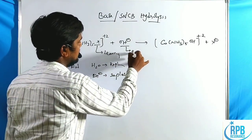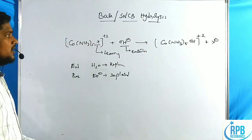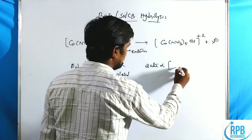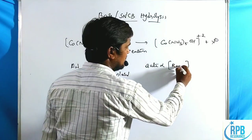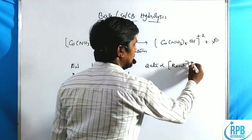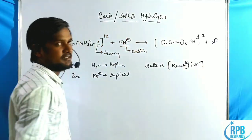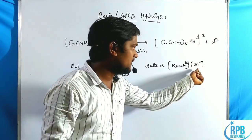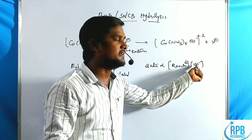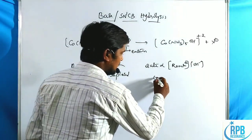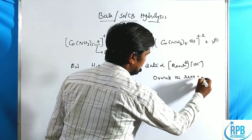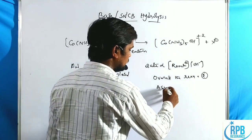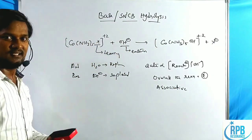According to kinetic studies, the rate of reaction is directly proportional to the concentration of the reactant complex as well as OH minus concentration. With respect to the nucleophile OH minus, it follows first-order kinetics. Overall the reaction is second order, meaning it follows second-order kinetics. This suggests an associative mechanism. Let us check whether this assumption is correct.